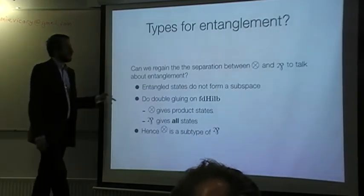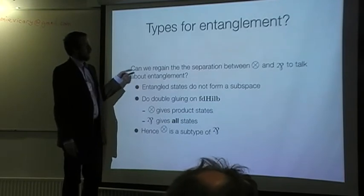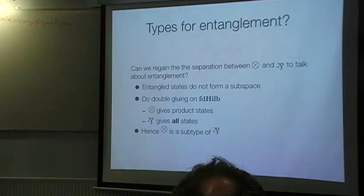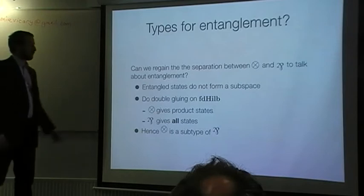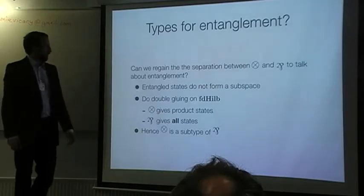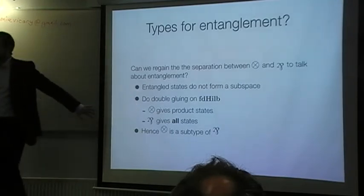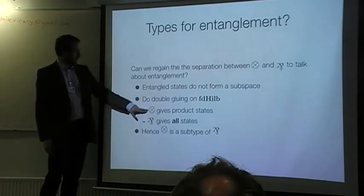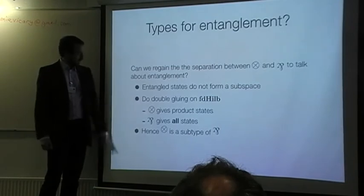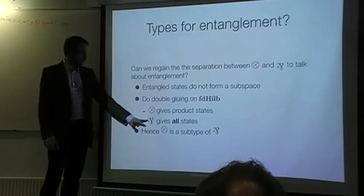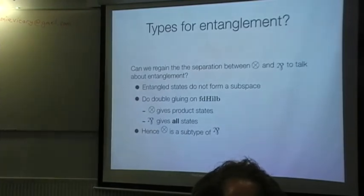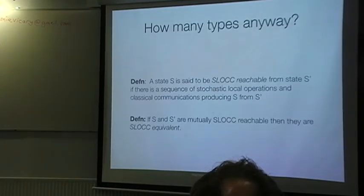So, one thing to notice is that you can't hope in the category of finite-dimensional Hilbert spaces to have an object corresponding to entangled states and a different object corresponding to separable states, because the entangled states are not a subspace. However, you can do double gluing, a different category on top. And this does separate the tensor from par. So, you get product states in the tensor, good. Par gives all states, which is not really what you wanted, but it's okay. Tensor is a subtype of par. Maybe that's acceptable. So, can we push this definition further?